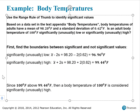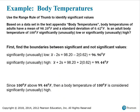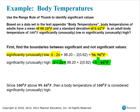We find the mean of the sample, which is given, and the standard deviation. Then we subtract two times the standard deviation from the mean, and we end up with the value for the significantly low boundary. For the significantly high boundary, we find the mean plus two standard deviations, which ends up as 99.44 degrees Fahrenheit — the boundary that separates significantly high numbers from not significant numbers.